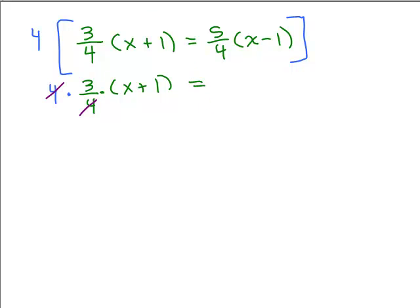And the same thing over here when I have 4 times 5 fourths. Think of this as times x minus 1. These 4s cancel so you don't distribute the 4 twice. If you did also multiply this inside parentheses by 4, you've just multiplied that right side by 16. So what do we have then? We have 3. We're left with 3 times x plus 1 equals 5 times x minus 1.